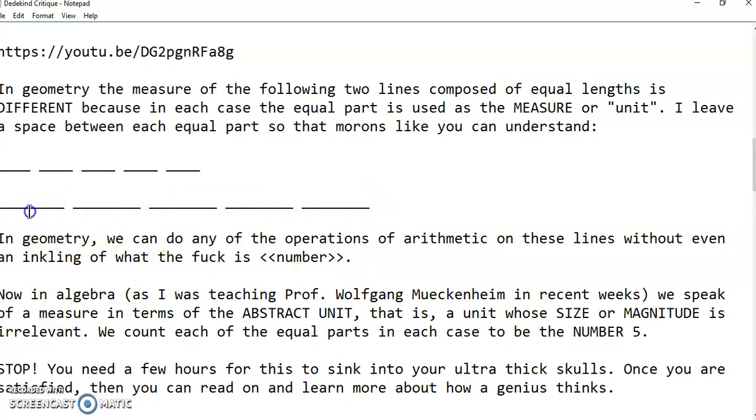Now, in geometry, we do care because this line is not equal to this line here. And we can do any of the operations of arithmetic on these lines without even an inkling of what is a number in geometry. In fact, the first six books of Euclid are a build-up to the concept of number, which is introduced in a rather vague way in book seven of the elements. But I've corrected that because I've defined number for the first time in human history correctly, and it applies to every actual number, not those bogus objects that you call irrational numbers or real numbers.